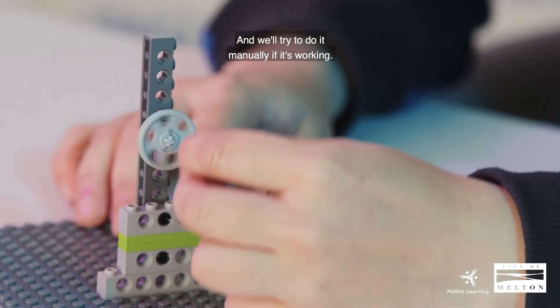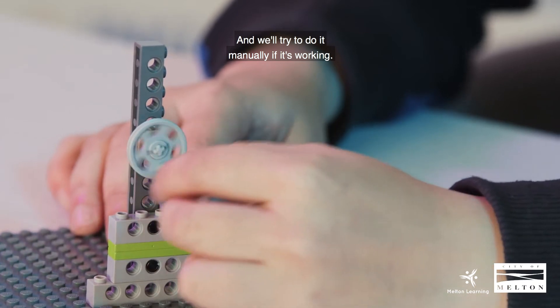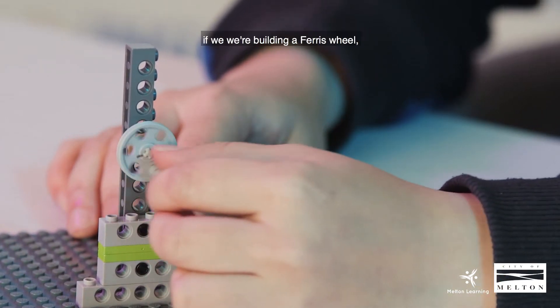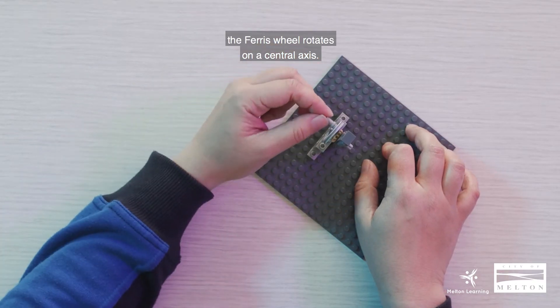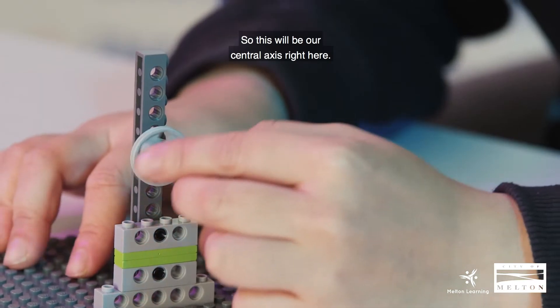And we'll try to do it manually if it's working. So as you can remember, if we were building a Ferris wheel, the Ferris wheel rotates on a central axis. So this will be our central axis right here.